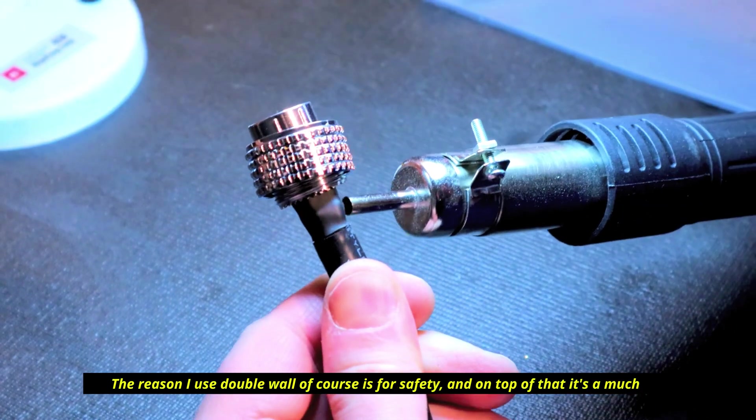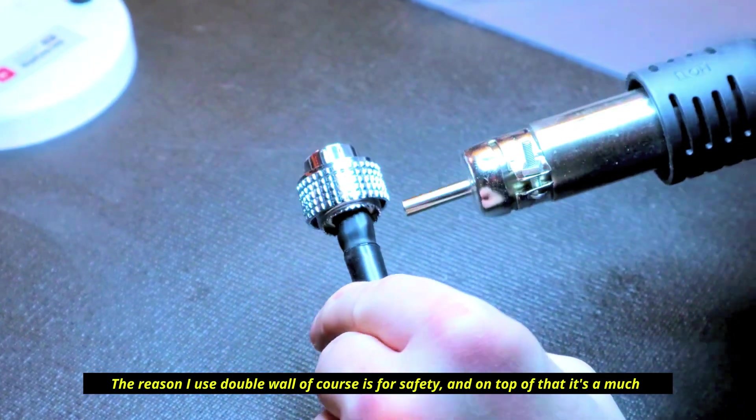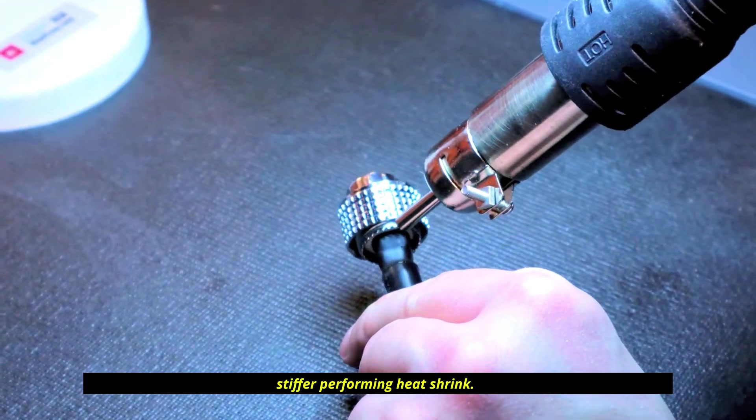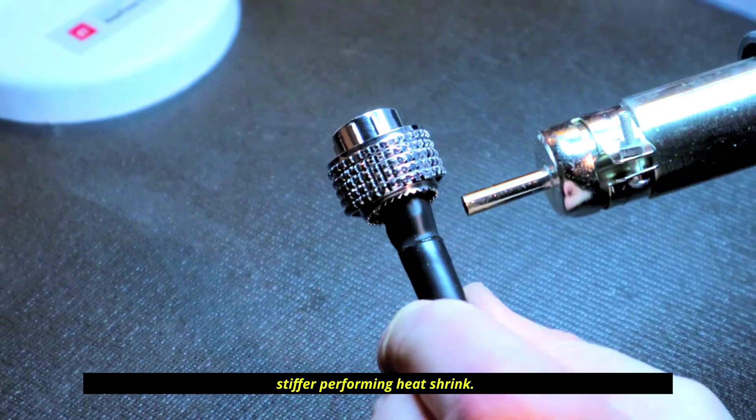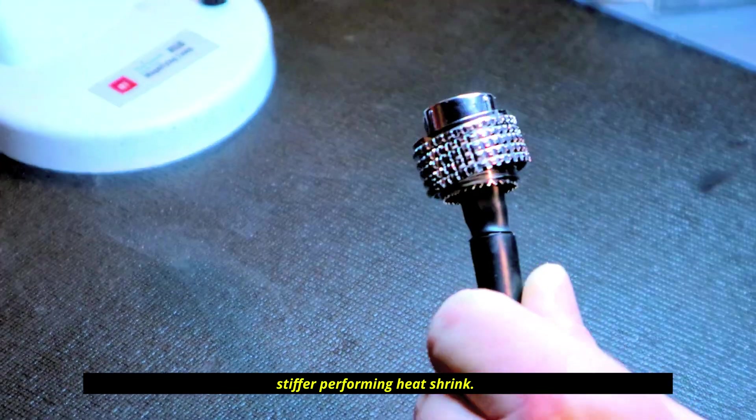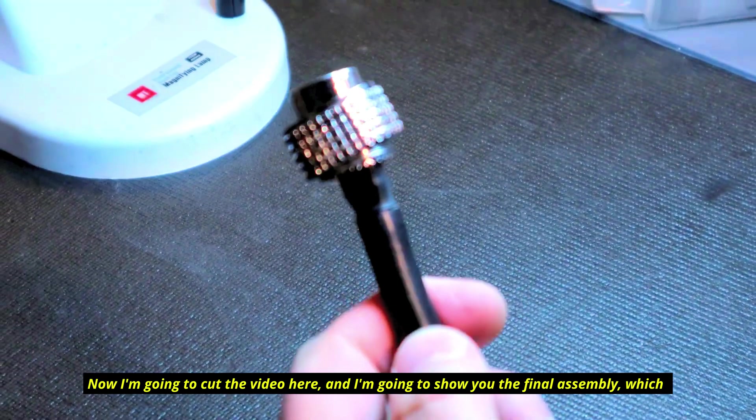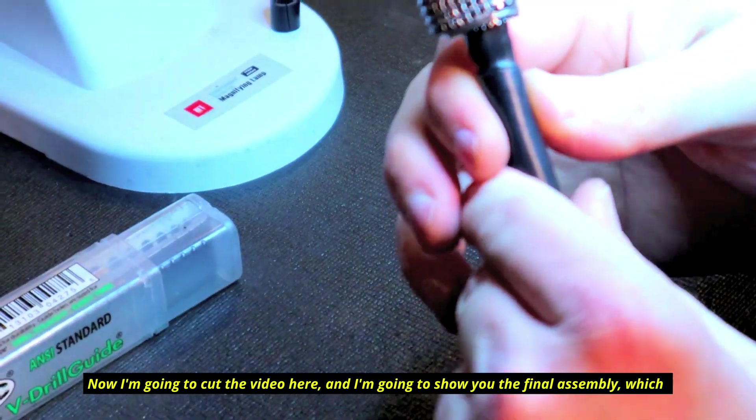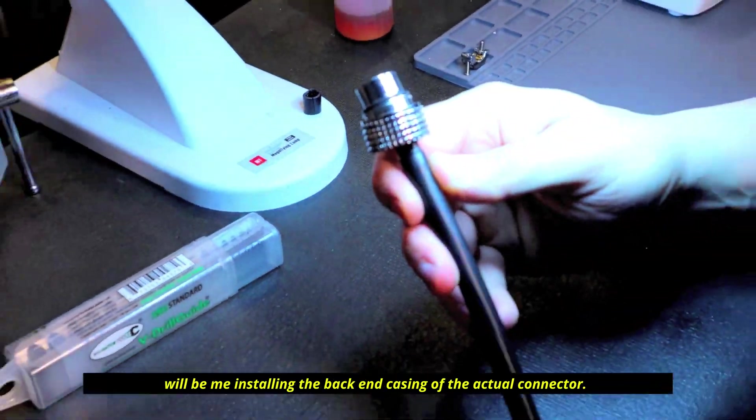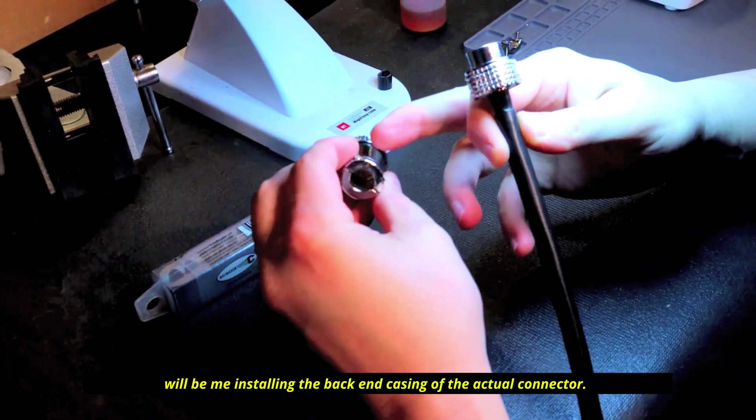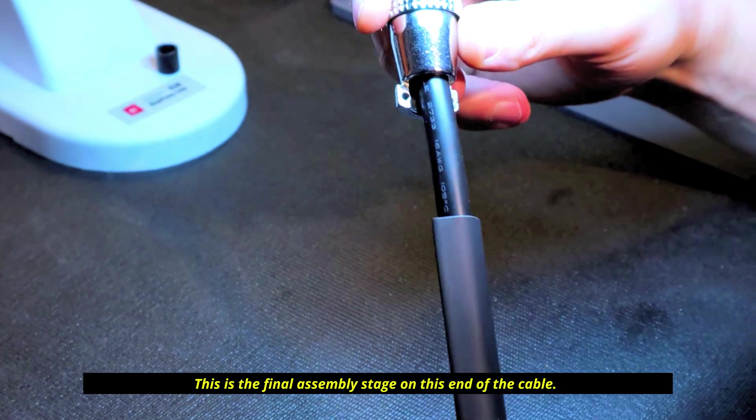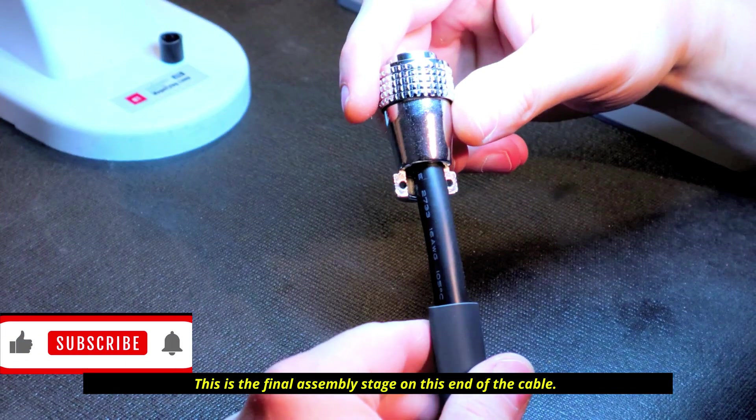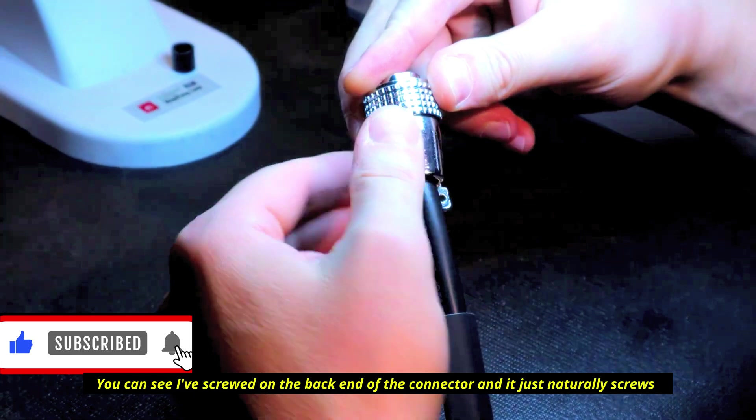The reason I use double wall of course is for safety, and on top of that it's a much stiffer performing heat shrink. Now I'm going to cut the video here and I'm going to show you the final assembly which will be me installing the back end casing of the actual connector. This is the final assembly stage on this end of the cable. You can see I've screwed on the back end of the connector and it just naturally screws on.